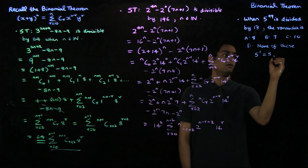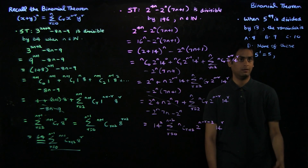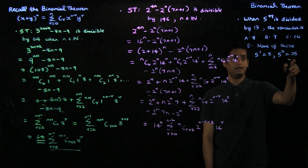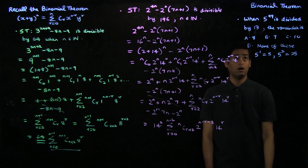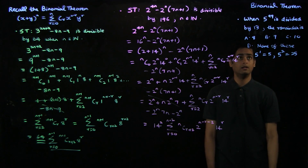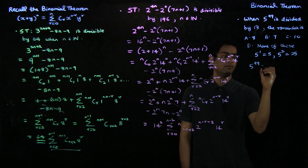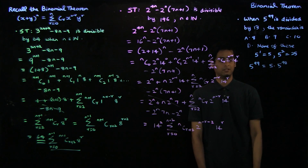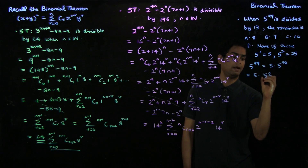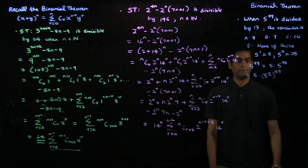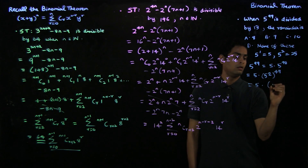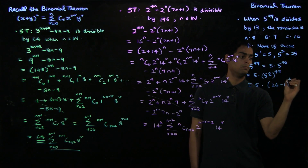Let's see how to rewrite 5^99 to obtain an amenable result. Computing powers of 5: 5^1 is 5, quite far from 13. 5^2 is 25, which is close to a multiple of 13, since 13 * 2 = 26. So let's write 5^99 as 5 * 5^98, and then as 5 * (5^2)^49. Since 5^2 is close to a multiple of 13, this is 5 * (26 - 1)^49, and 26 is a multiple of 13.